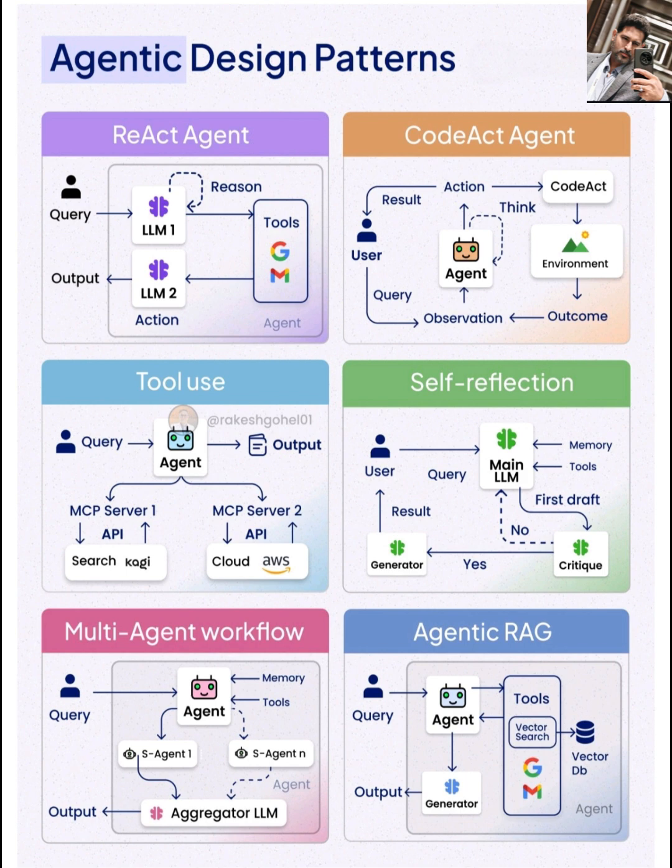Now, let's look at self-reflection. This is a more advanced pattern where the agent evaluates its own performance and output. After generating a first draft response using a main LLM and potentially some tools, a critique mechanism — often another LLM or a set of rules — analyzes the draft.